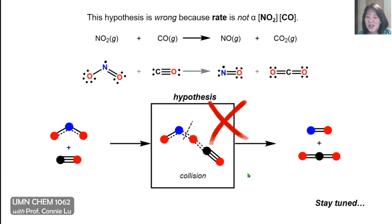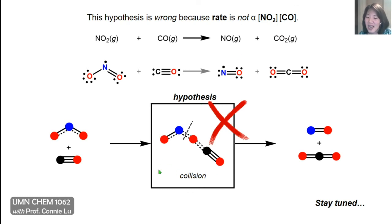Coming back to the hypothesis, it is clearly incorrect — the rate is not proportional to NO₂ times CO, but rather to NO₂ squared. This tells us that the reaction does not proceed by the simple collision mechanism as originally proposed. Stay tuned to find out what the reaction mechanism might be.